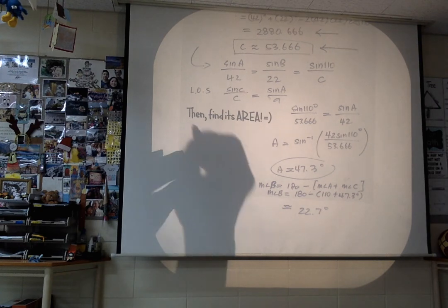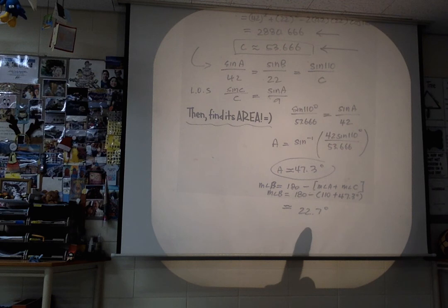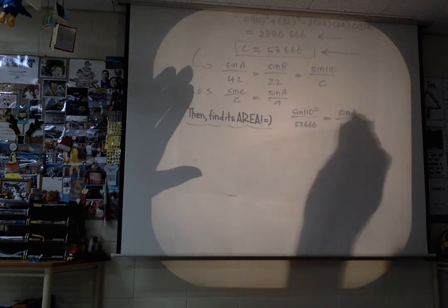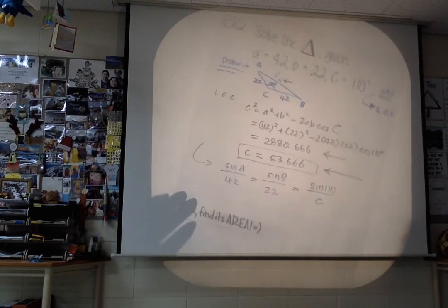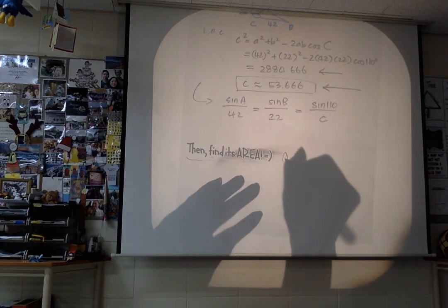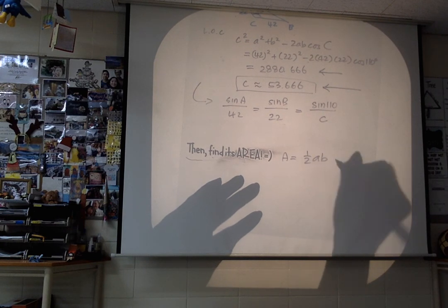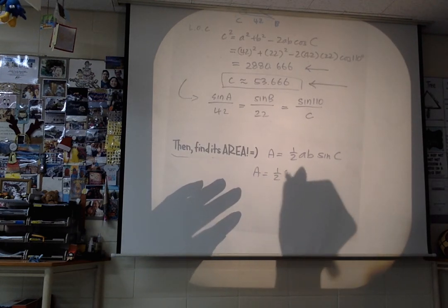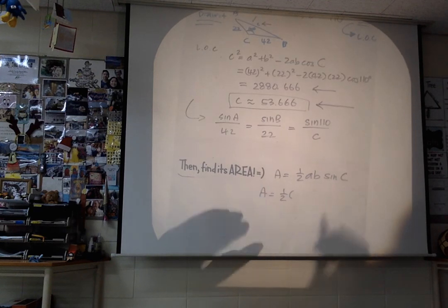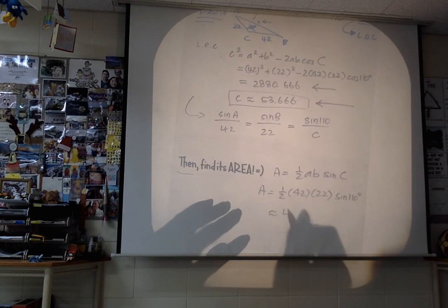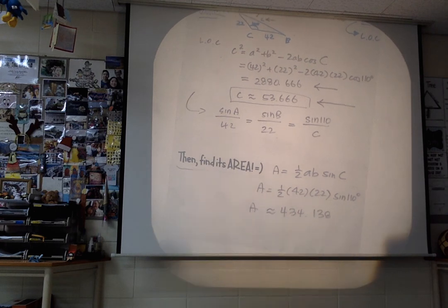Now let's find the area. We identified this triangle as side-angle-side, so we use the formula from section 6.1: area equals one-half times A times B times sine of C. In our case, that's one-half times 42 times 22 times sine of 110 degrees. And you get an area of approximately 434.138 square units.